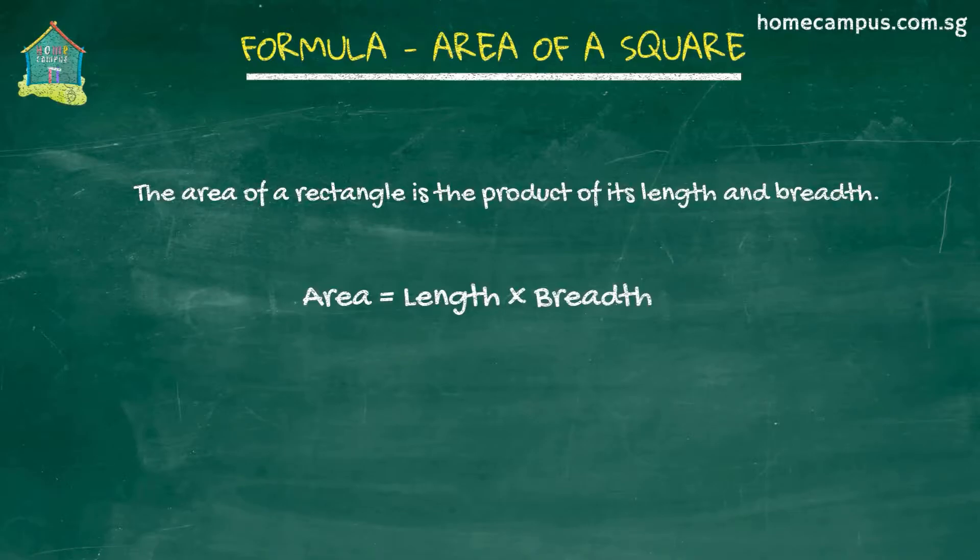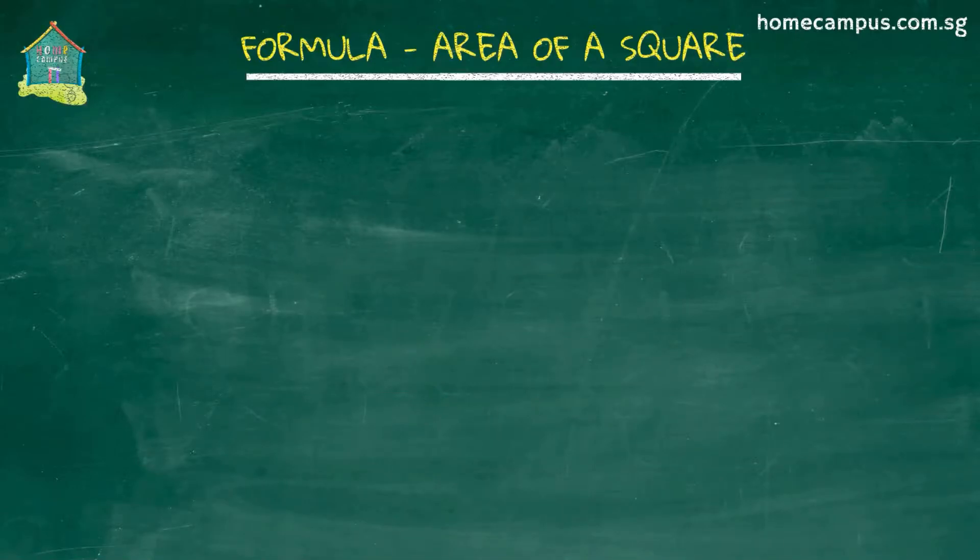Now in the case of a square, which is also a rectangle, it's a special type of rectangle. We use the same formula for calculating the area. So the area of a square is the product of its length and breadth. In a square though, the length and breadth are equal. Therefore the area of a square is the length times its side.